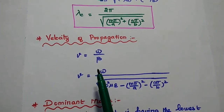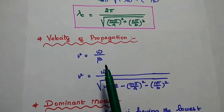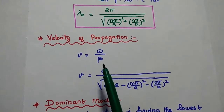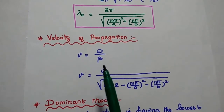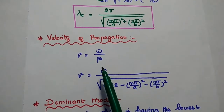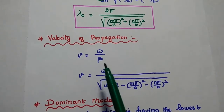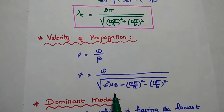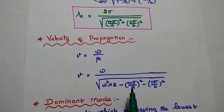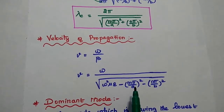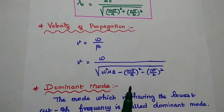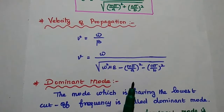Next, the velocity of propagation. The velocity is the ratio of omega to beta — angular frequency to the phase shift constant. We substitute the value of beta: square root of (omega squared mu epsilon minus (Mπ/a) whole squared minus (Nπ/b) whole squared). This gives the velocity of propagation for TM waves in rectangular waveguide.